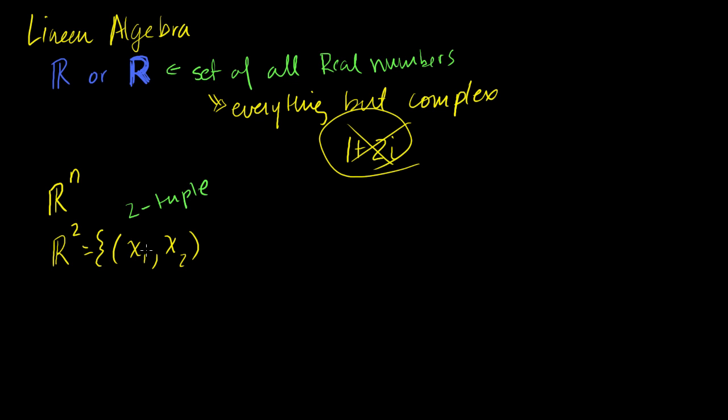Let me write it this way - it's the set of all tuples, sometimes called a 2-tuple, which just means a list of two numbers. So ℝ² is the list of all ordered 2-tuples, all ordered lists of two numbers. Let me actually write down the word ordered, because that's important.